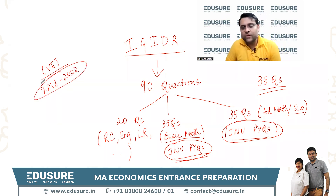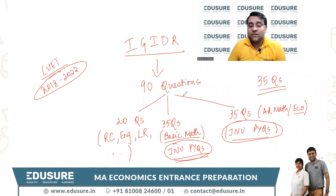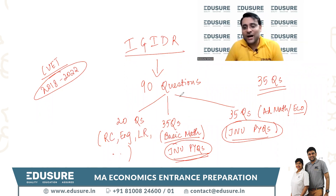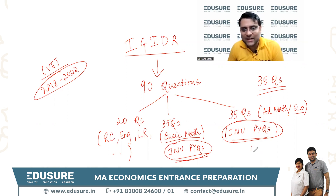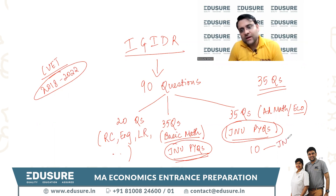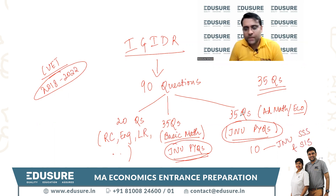A question that I'm already getting is how many years of JNU papers to do. You need to do at least 10 previous year question papers of JNU, which will include both SSS and SIS.